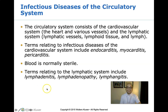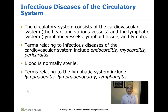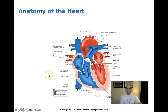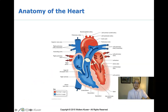Lymphangitis is inflammation of the lymphatic system — a network of organs, cells, ducts, and glands found throughout our body and a major component of our immune system. If there is inflammation in any part of the lymphatic system, the general term we use is lymphangitis.